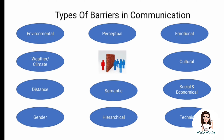Next are barriers. Anything that disrupts or disturbs the process of communication is a barrier. There are several types: environmental, weather or climate, distance, gender, perceptual, semantic, hierarchical, emotional, cultural, social, economical, technical, and many more. A semantic barrier is a linguistic barrier — the language a person uses to convey a message must be understood by the audience. If the audience does not understand that language, there is no point to the communication.